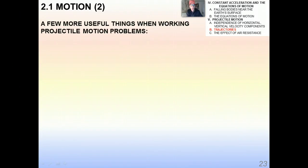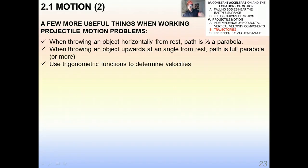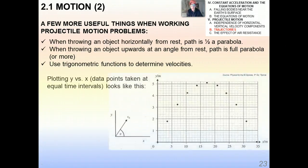A few more useful things when working these problems, which you may or may not have noticed before. When throwing an object horizontally from rest, the path is one half a parabola. We've already seen that. When throwing an object upwards at an angle from rest, the path is a full parabola, assuming it comes down to where it started. It could be more if you do that off a cliff and it goes down lower than where it started. And we want to use trigonometric functions to determine velocities when it hits the ground, because to determine the velocity you need the magnitude of that vector pointed down at an angle, and the angle it makes with the horizontal.